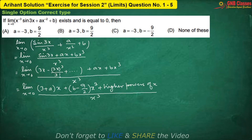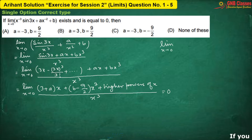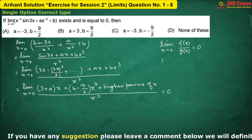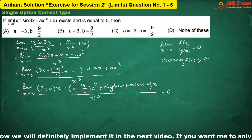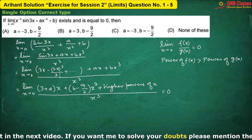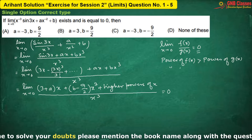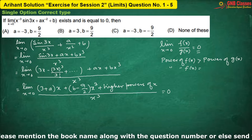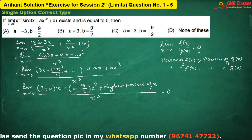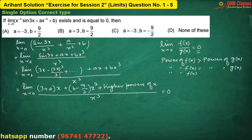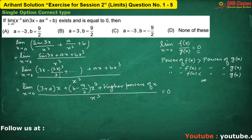They have said that the value of this limit is zero. Now, when limit x is approaching towards zero, if it is f(x) by g(x) and the answer is zero, then definitely the power of f(x) should be higher than the power of g(x). Then only you will get your answer as zero. If power of f(x) equals the power of g(x), then you will get a numerical value other than zero. If the power of f(x) is less than the power of g(x), then the answer will be infinity.